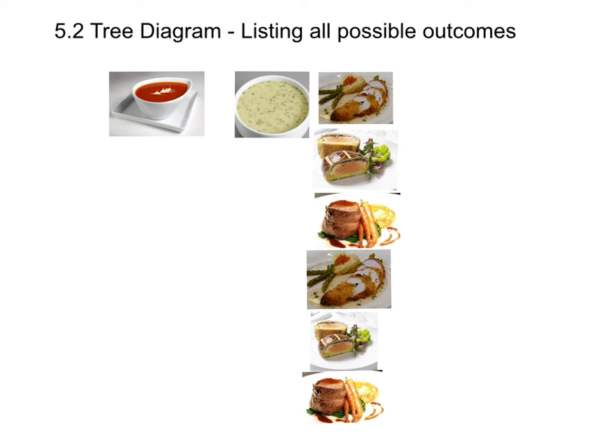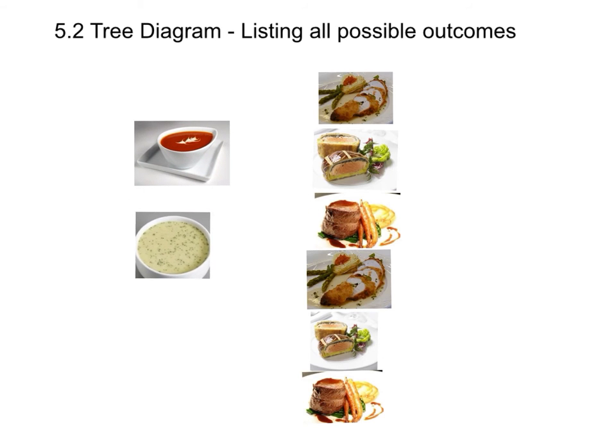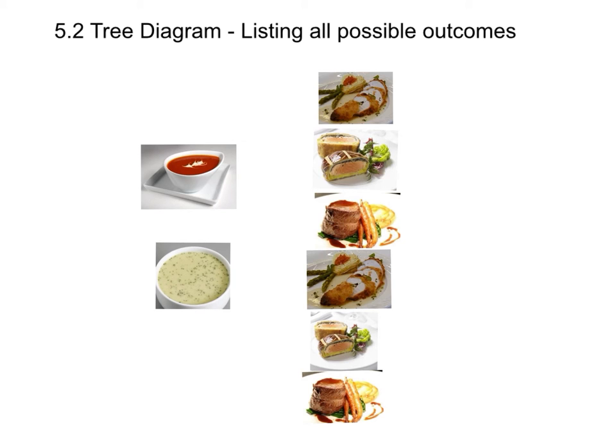Let's take the example of visiting a cafe. Suppose in the soup item we have red soup and cream soup, or white soup. Therefore, in the soup item we have two choices.